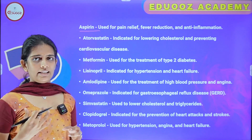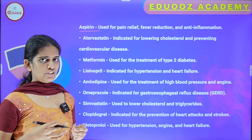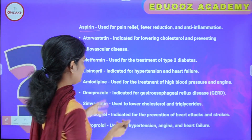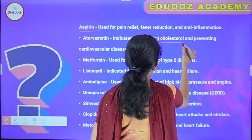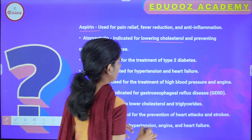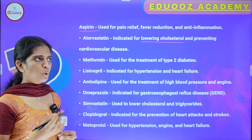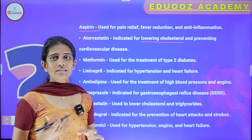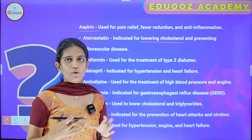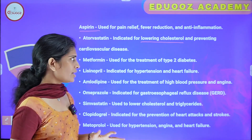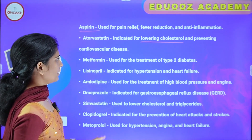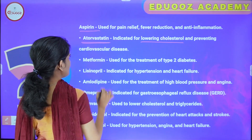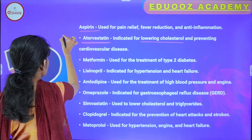Atorvastatin — we call it a statin type of drug, used in hyperlipidemia conditions. It is indicated for lowering cholesterol. Cholesterol is lowered, reducing body fat and high amounts of fat in the blood. It is used in cardiovascular disease, atherosclerosis, and cardiovascular disorders — to correct cholesterol levels and prevent cardiovascular disease.